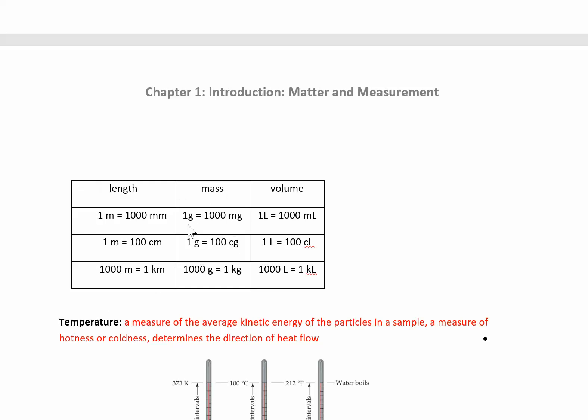For mass you do the same thing: there's a thousand milligrams in one gram, a hundred centigrams in one gram, and a thousand grams in one kilogram. There's a thousand anythings in one kilo-anything. There's a hundred centi-things in one base unit, and a thousand milli-things in one base unit. So a thousand milliliters in one liter.